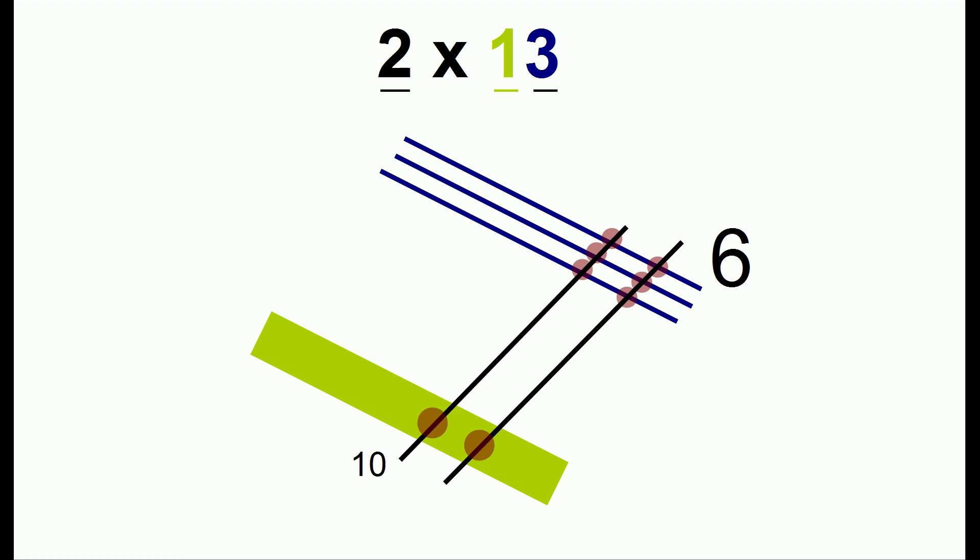So this is 10 dots here, this is really like 10 dots, and this is really 10 dots here. So 10 plus 10 is 20, and when we add that to the 6, we have 26.